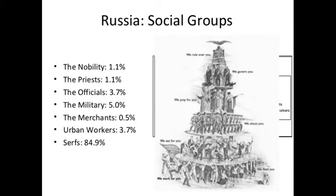Just above the serfs, you have urban workers - only 3.7 percent of Russians lived and worked in the city. Most Russians were agrarian and worked on the land. Very few were merchants, military, officials, or priests. The Russian Orthodox Church was very powerful, so priests had lots of power and wealth. The elites - priests and nobility - made up only 2.2 percent of the whole population. So if we look at that pyramid, Russia was a very divided and unequal society where power was in the hands of the very few at the very top.